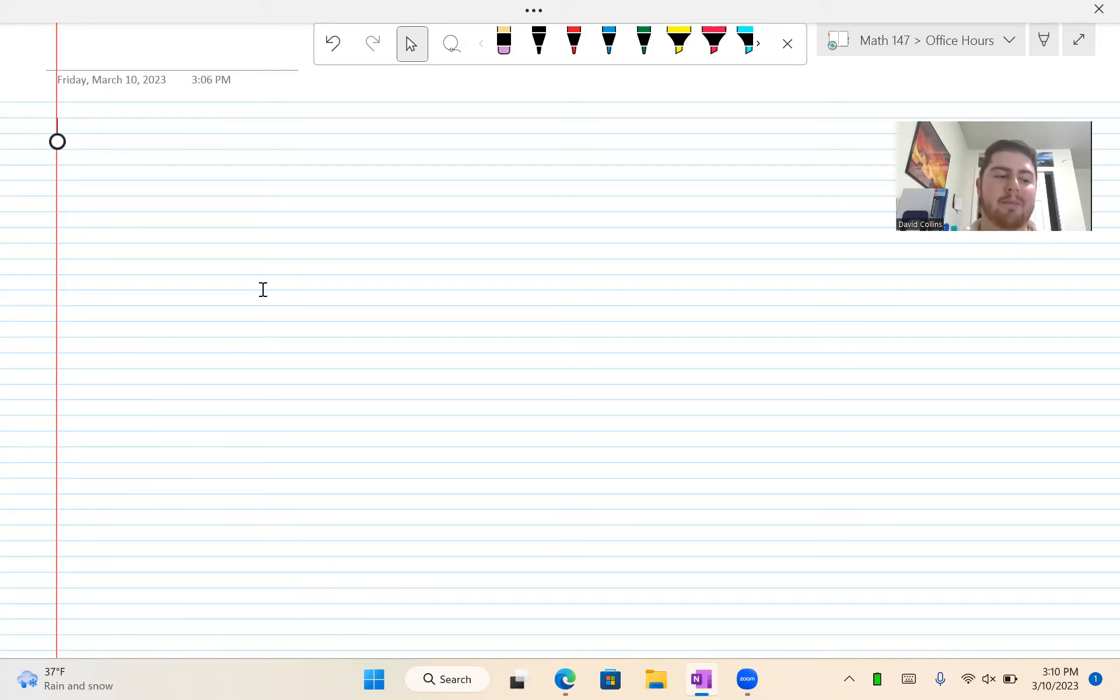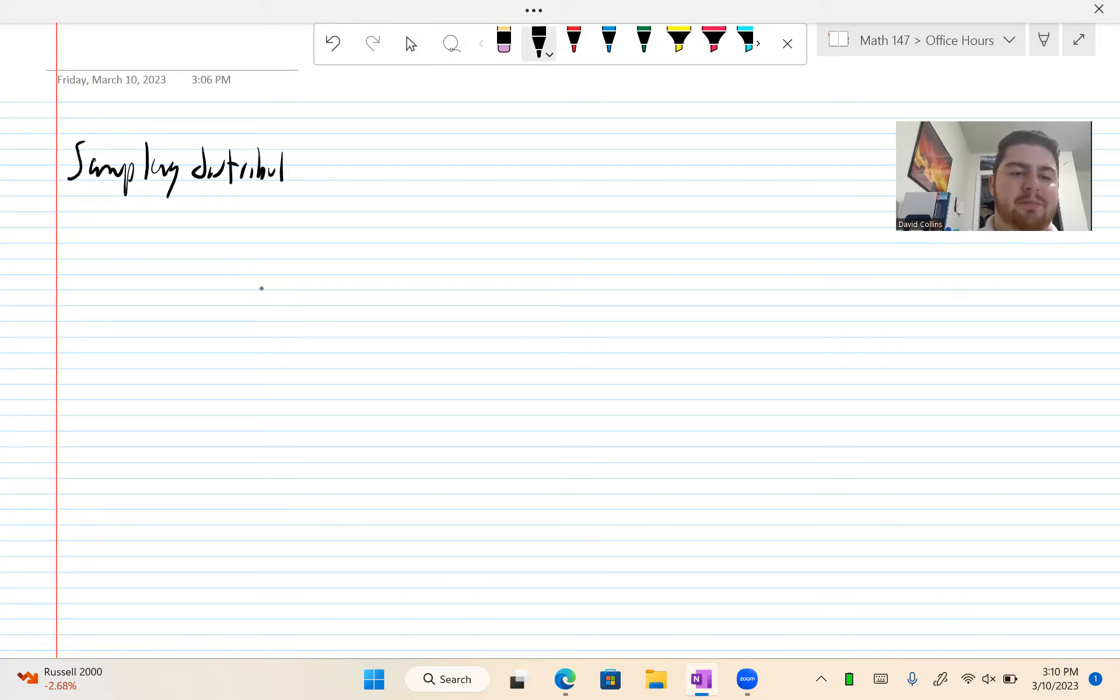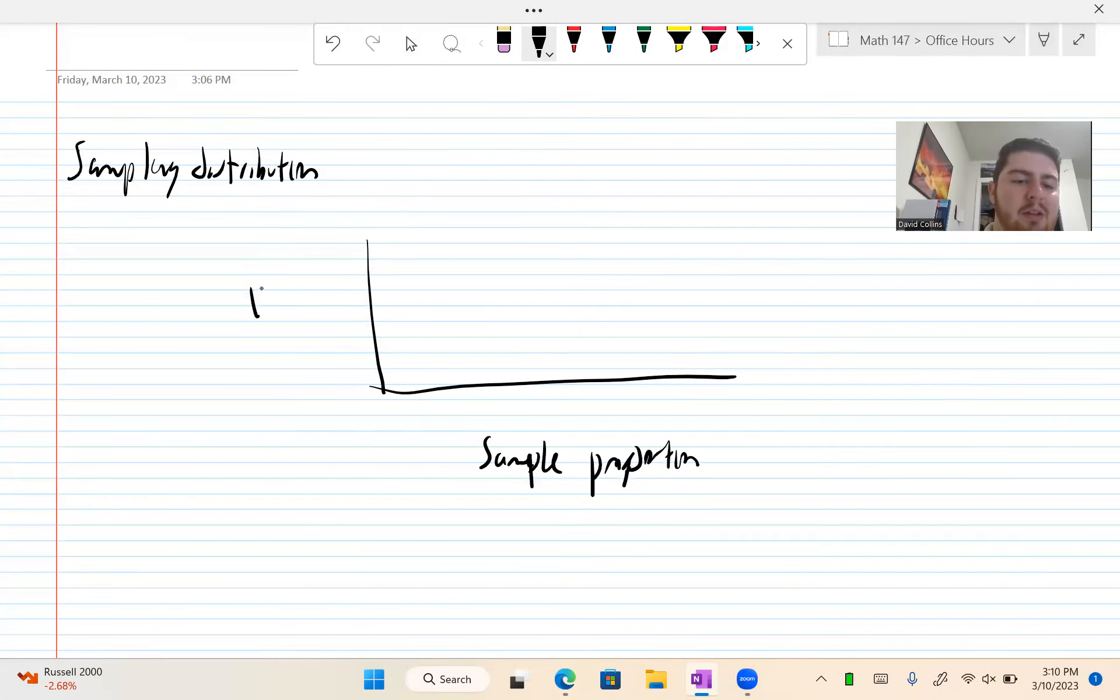Now I have two samples and two sample proportions, like 80% and then like 70-something percent. If I keep doing that over and over again, I get what's called a sampling distribution. And it looks something like this. You have your sample proportion and then here you have number of samples.